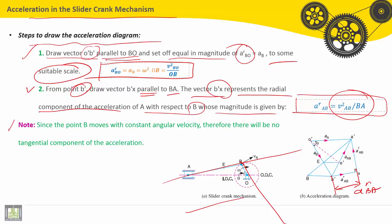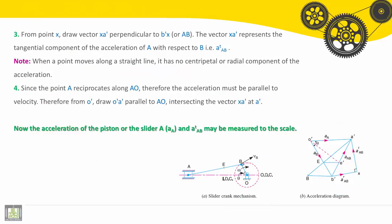Note: since the point B moves with constant angular velocity, therefore there will be no tangential component of the acceleration — no A tangential for point B. Third step: